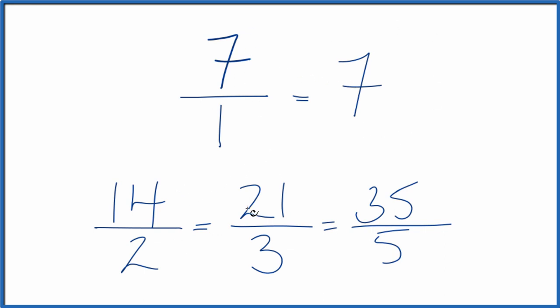If you divide 14 by 2, 21 by 3, or 35 by 5, you get 7. That's because they're equivalent fractions.